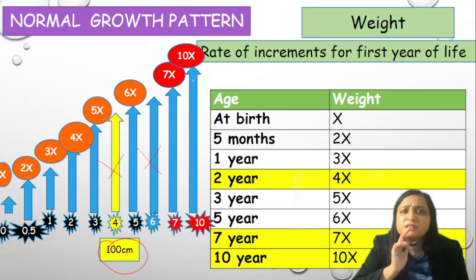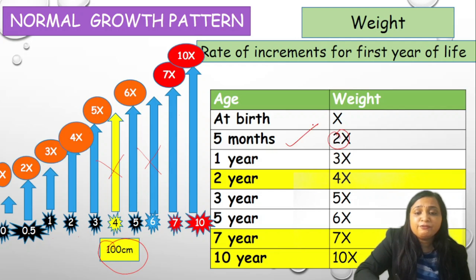Many questions could be asked from this single slide. Please pay attention. It is very easy. You have to just remember it once and you will never forget it. Correct answer is the birth weight doubles by the age of 5 months.